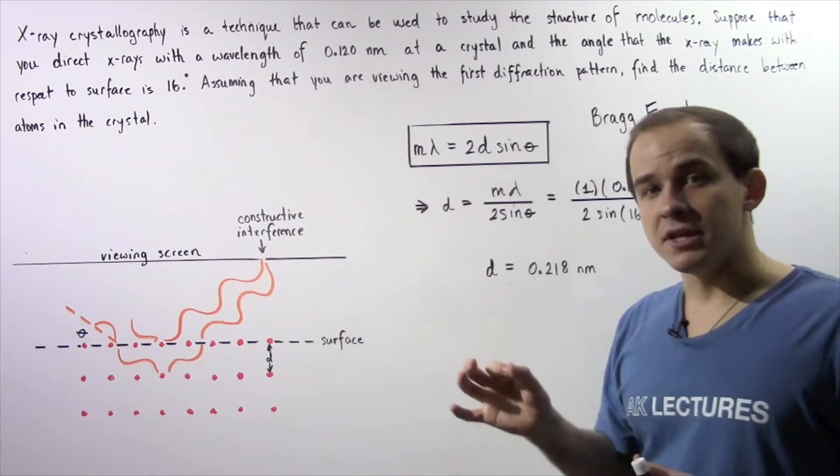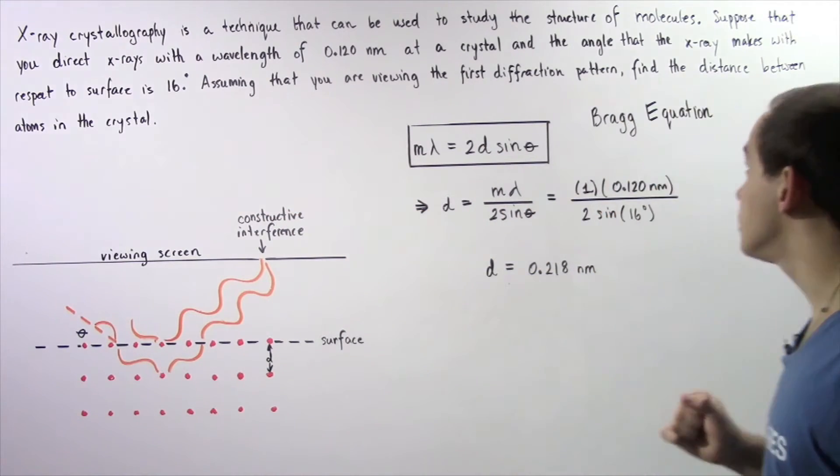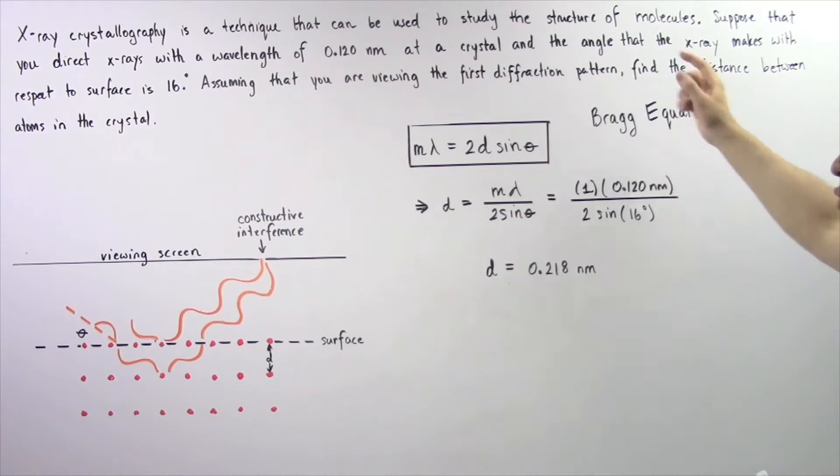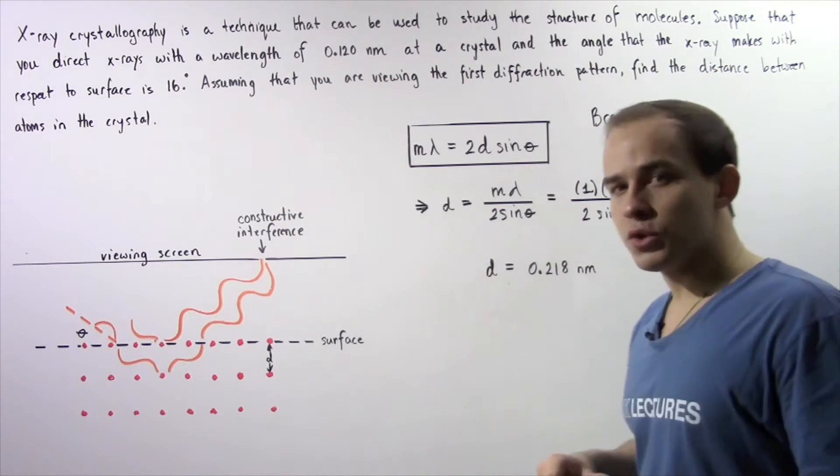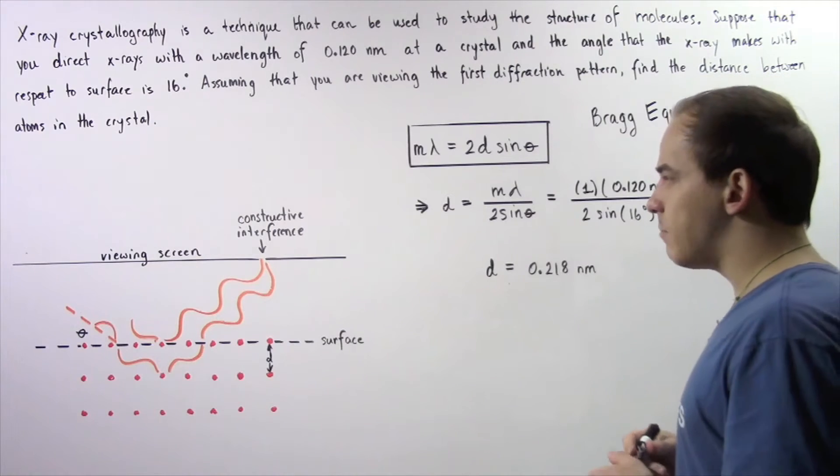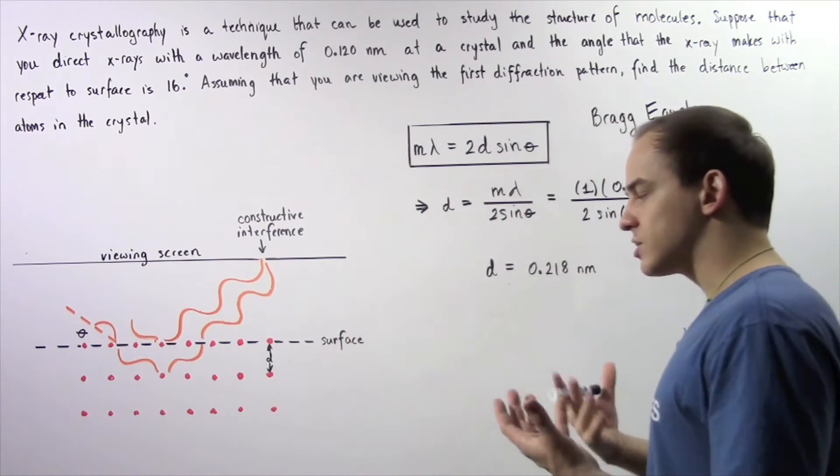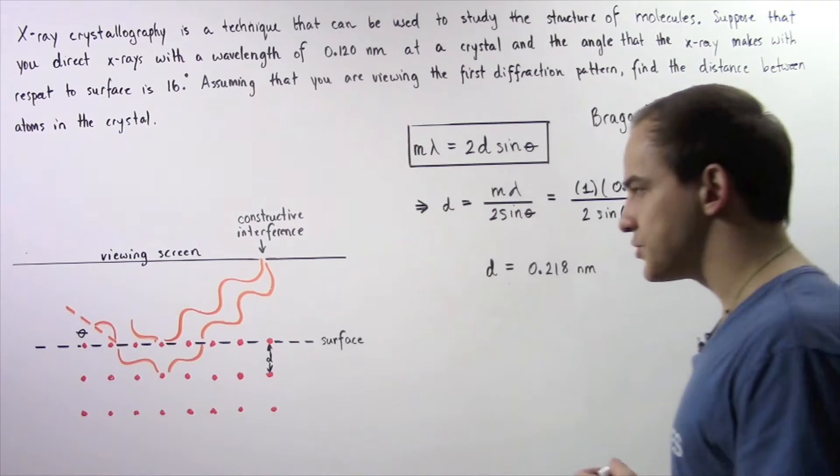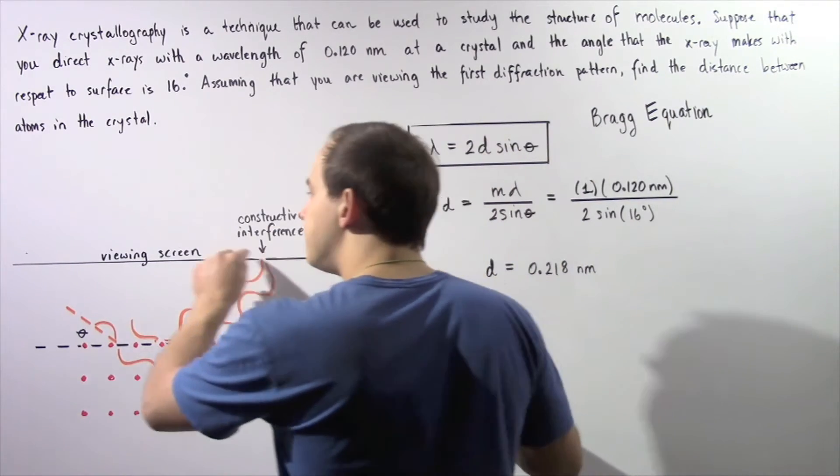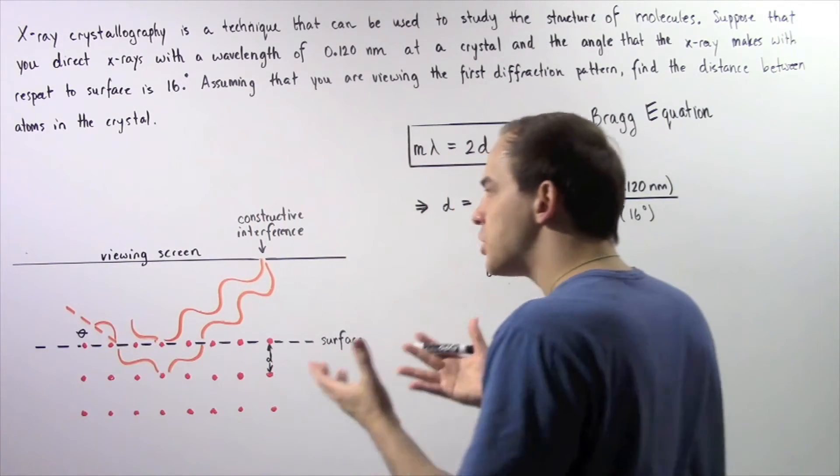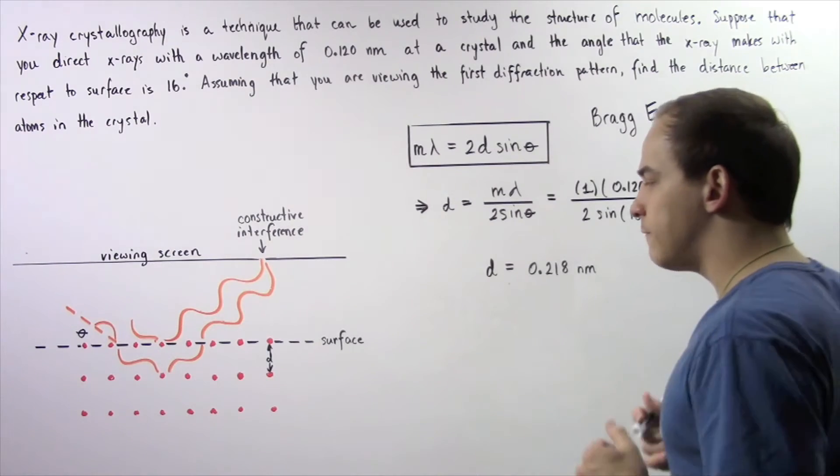Assuming that we are examining the first diffraction pattern, find the distance between the atoms inside our crystal. Let's begin by looking at the following diagram that describes what is taking place. We have a viewing screen on which the diffraction pattern is formed.